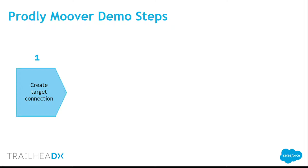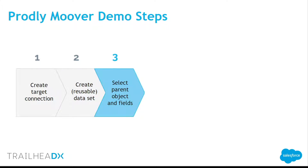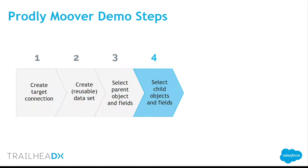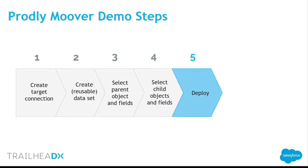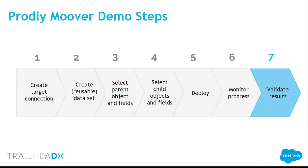The whole process involves a few steps. First, we're going to create a target connection — connect to the sandbox where we want to bring the data. Then we'll create a reusable dataset, telling the tool which related objects you want to copy over, including selecting parent objects, parent relationships and fields, as well as child relationships and fields. Then we'll actually deploy, bringing the data over into the destination org. We'll monitor progress in real time as it deploys, and finally validate the results.